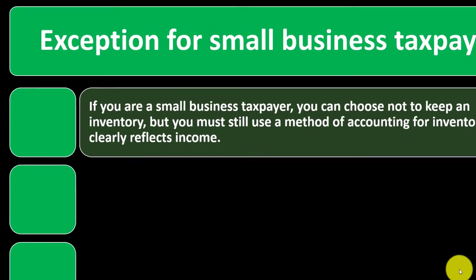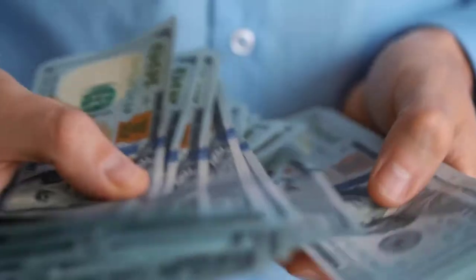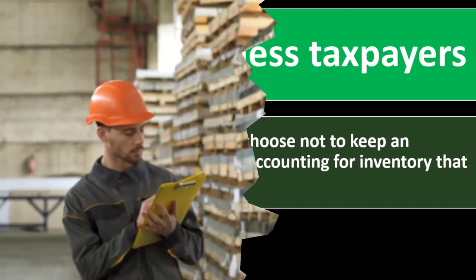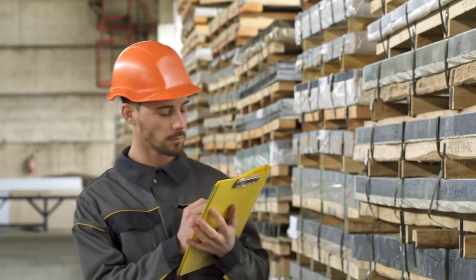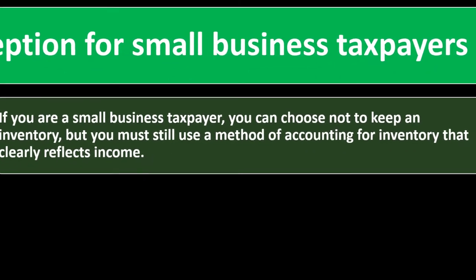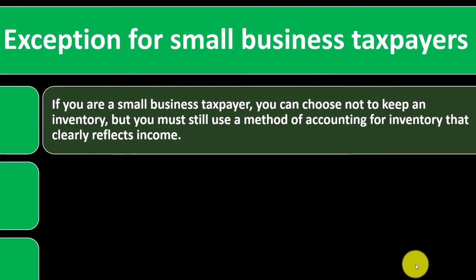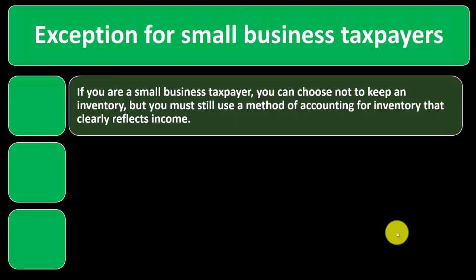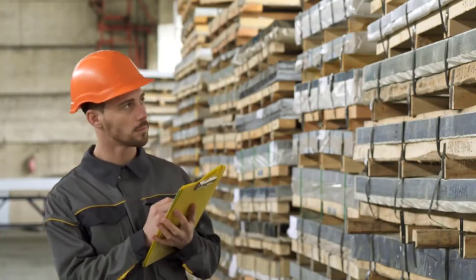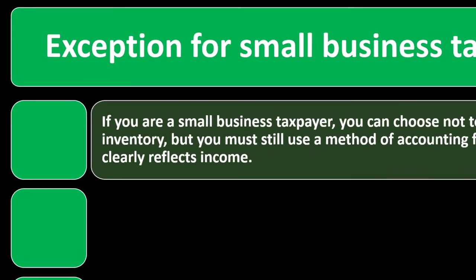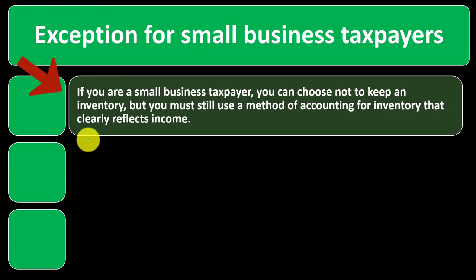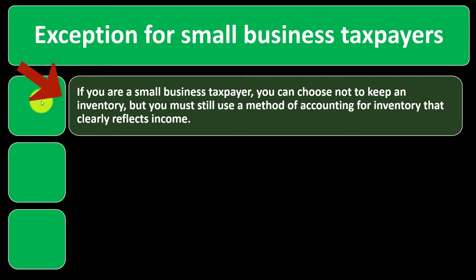So you could have certain situations where you have inventory but might still be on a cash method — for example, where you're not accumulating a lot of inventory or stockpiling it, like you're purchasing something and then selling it pretty close in time. You could make an argument: I'd still like to use the cash method even though I technically have inventory involved, because I don't want to be tracking inventory under the normal method — I have a just-in-time type of system and I'm not holding on to inventory that much. So once again, if you are a small business taxpayer, you can choose not to keep an inventory, but you must still use a method of accounting for inventory that clearly reflects income.